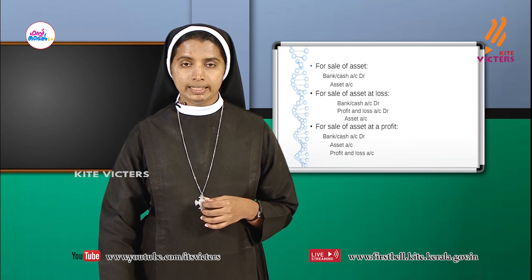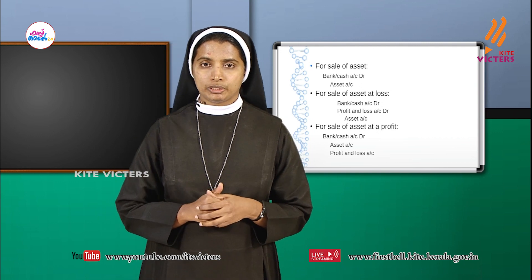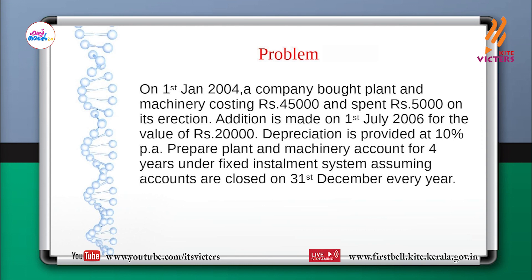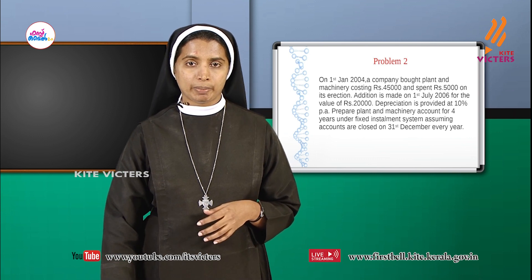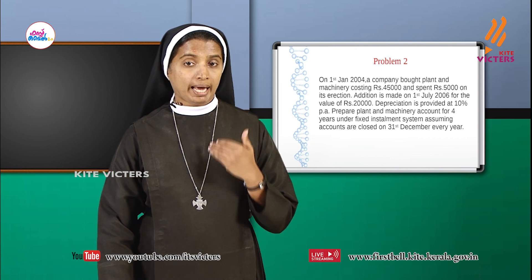Now we are moving on to a problem. On 1st January 2004, a company bought plant and machinery costing ₹45,000 and spent ₹5,000 on its erection. An addition is made on 1st July 2006 for a value of ₹20,000. Depreciation is provided at 10% per annum. Prepare the plant and machinery account for 4 years under the fixed instalment method.